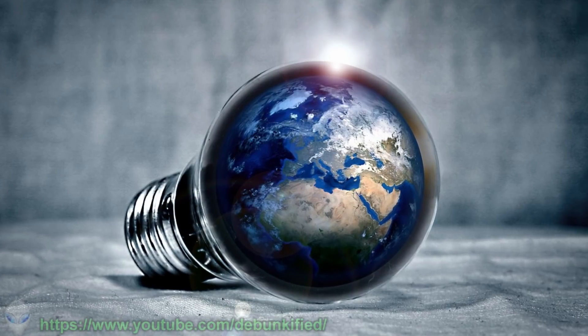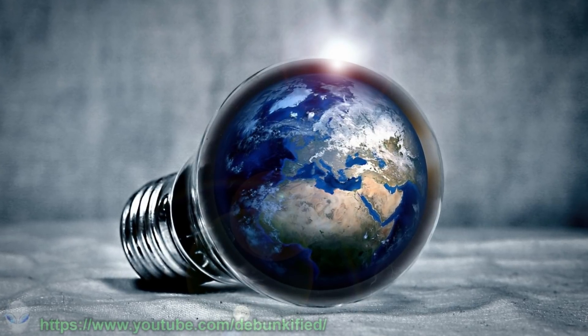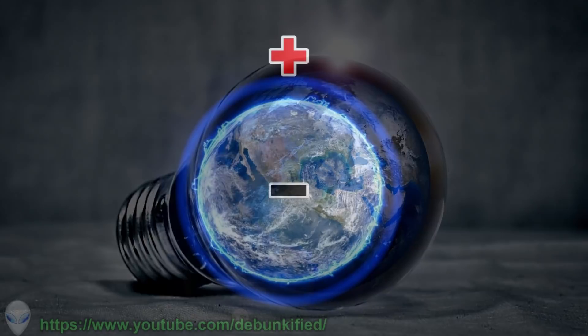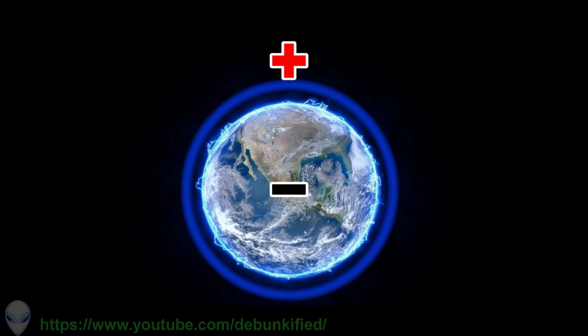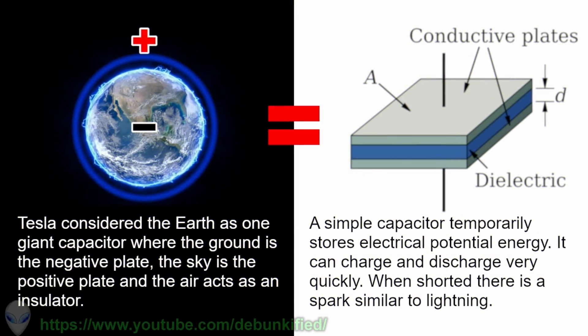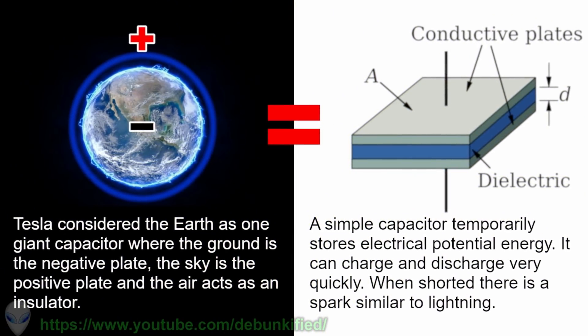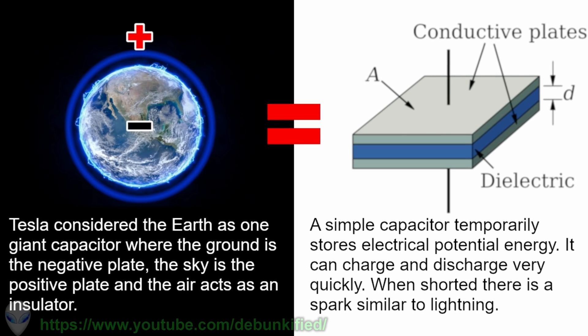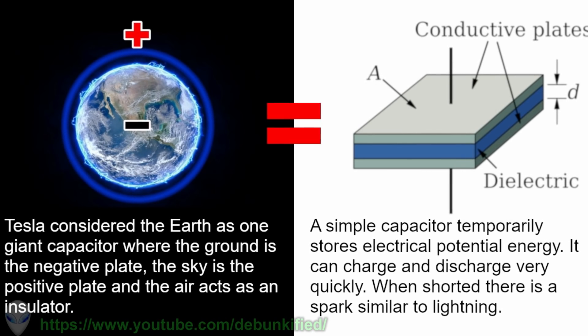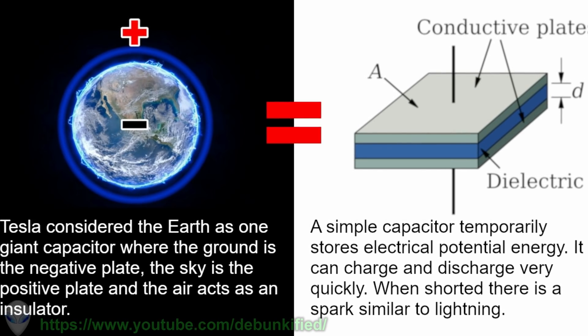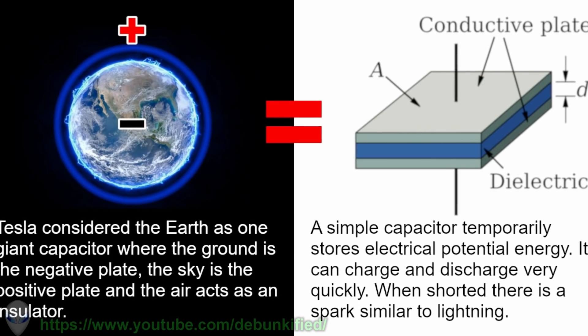As you may or may not know, the earth is basically a giant capacitor, in which the ground is the negative plate and the sky is the positive plate, while the air acts as an insulator. Negative and positive electrostatic fields build up between the earth's ground and sky, and an ion trail is formed between the two.